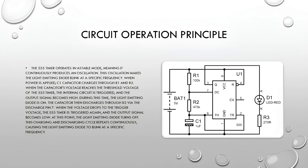This charging and discharging cycle repeats continuously, causing the light-emitting diode to blink at a specific frequency. Now, let's examine the functions of the electronic components used in a simple light-emitting diode flasher circuit.